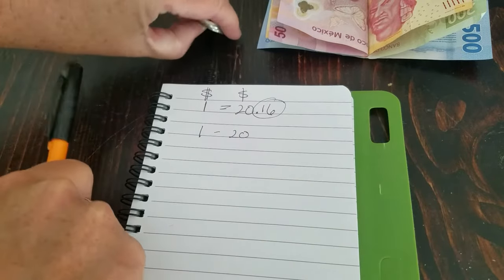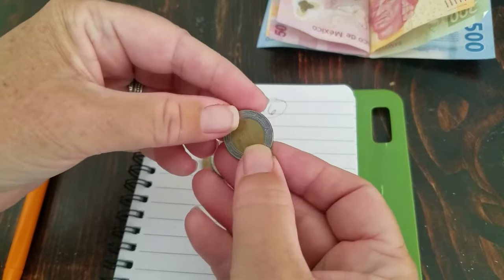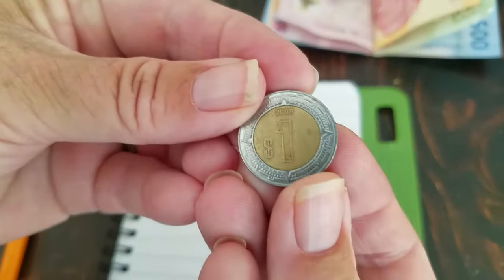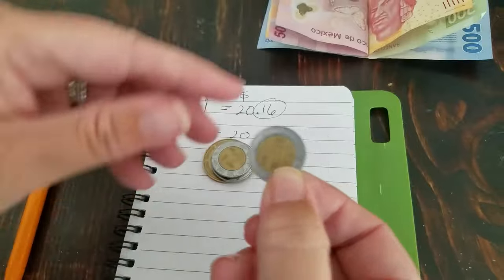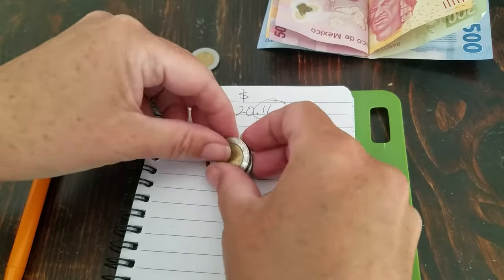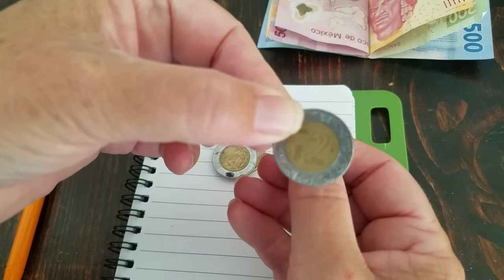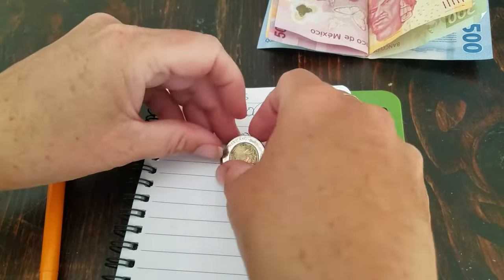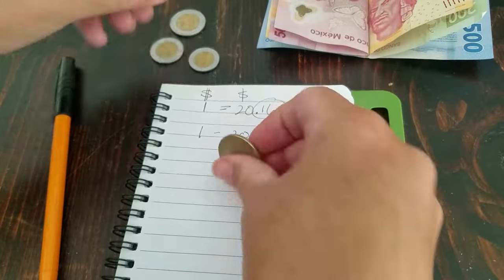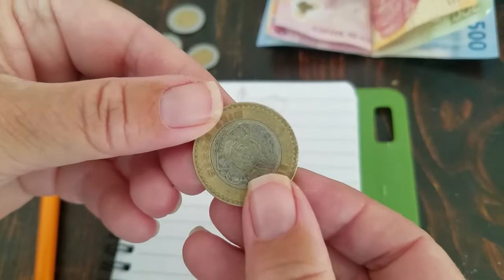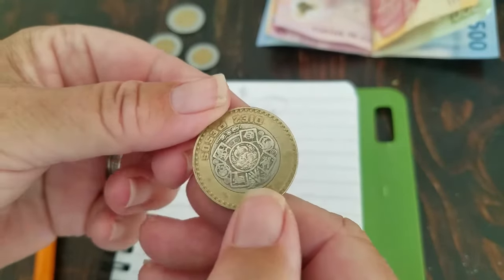So let's take a look. What is a peso? So low pesos or small amounts of pesos come in coin form. This is 1 peso, which is worth about 5 cents. Here is a 2 peso coin, so it's worth 10 cents. Here is a 5 peso coin, worth a quarter. And this is a 10 peso coin.